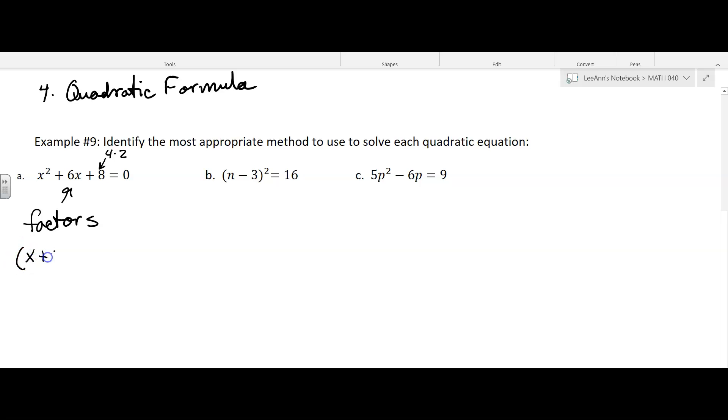X plus four, x plus two, check it to see if that's how it factors. You got a four x and a two x. That makes a six x. Four times two is eight. So I get solutions of negative two and negative four. I think in WebAssign, they don't want those squirrely brackets. You just put negative two and negative four.